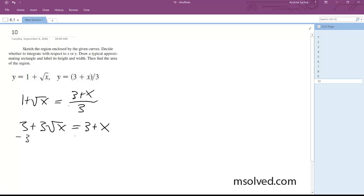So subtract 3, I get 3 root x equals x. Next thing I can do is I'm going to divide through by 3, so then what we're going to have next is x squared over 9 is equal to x.